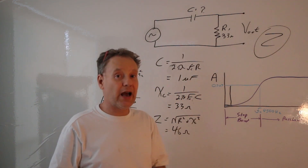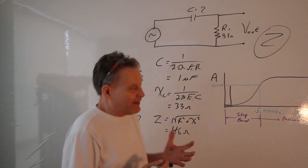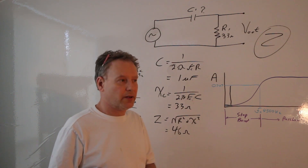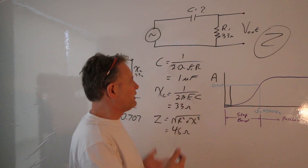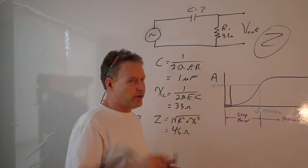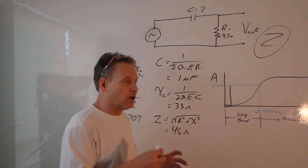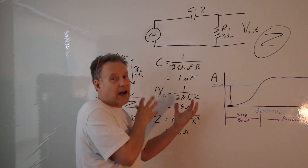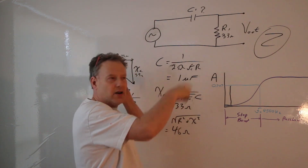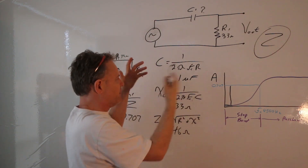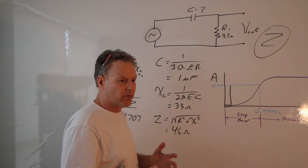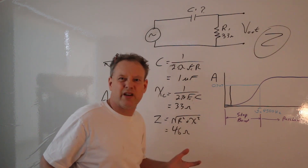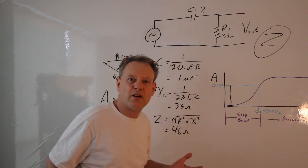Just like the low-pass, you'll need to calculate the gain at 0.1 times the corner frequency — that'll be very low, around 0.1 — and at 10 times the corner frequency, where the gain will be around 0.99. I think you have everything you need for this assignment. I'll do another video about the cool stuff behind the scenes and what 0.707 really means. Okay, bye!